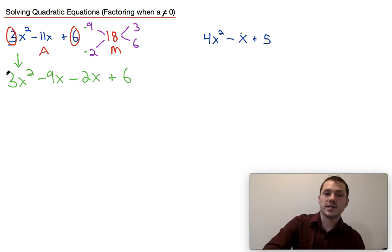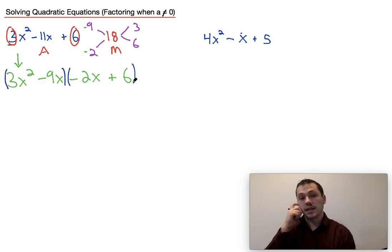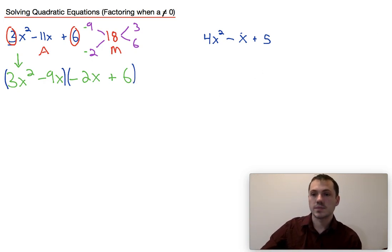Now the next thing we have to do is factor by grouping. In order to factor by grouping, you want to put parentheses around the left two terms and parentheses around the right two terms, and you want to take out the greatest common factor. The greatest common factor is the greatest number and/or variable that goes into each term within the parentheses. So if I look at the first terms here, the greatest factor of 3 and 9 is 3, so I can take a 3 out. The greatest factor of x squared and x is just x, so I can take an x out here.